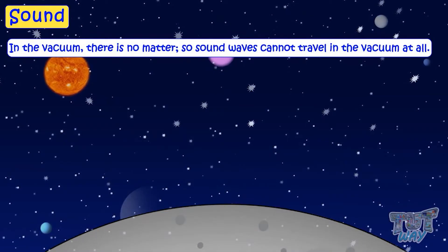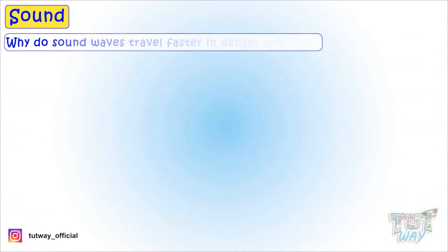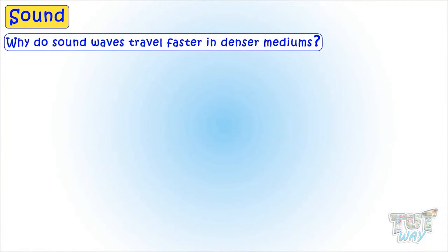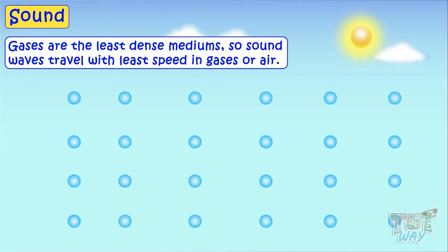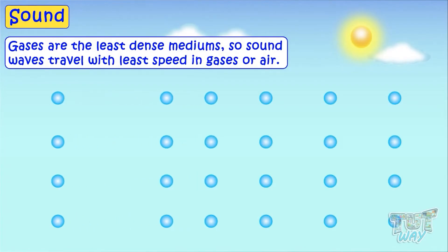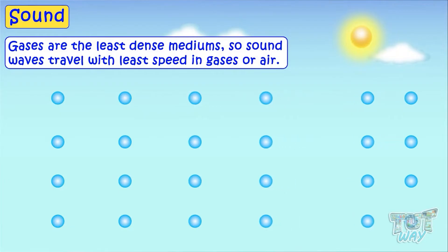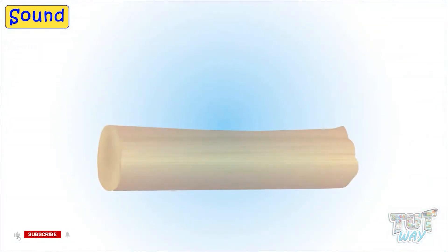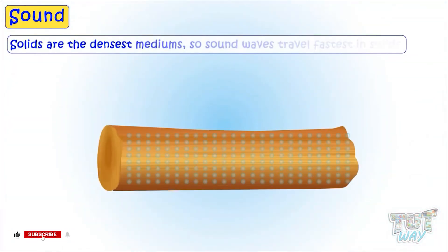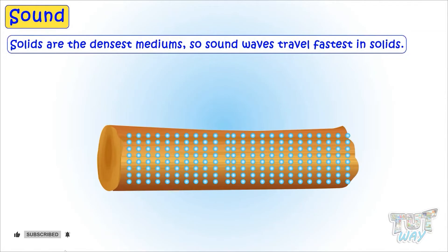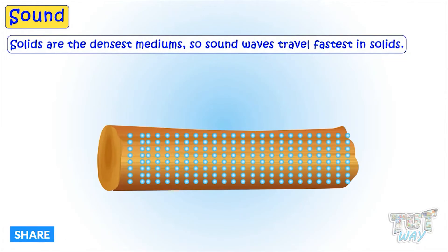Now we will see why sound waves travel faster in denser mediums. Gases, or air, are the least dense medium, and sound travels with the least speed in air. Solids are the densest mediums, so sound waves travel fastest in solids.